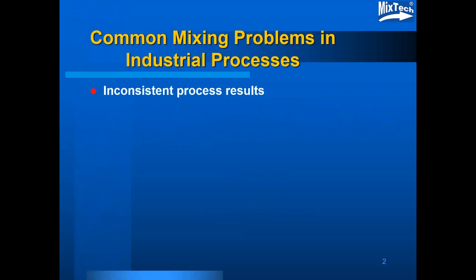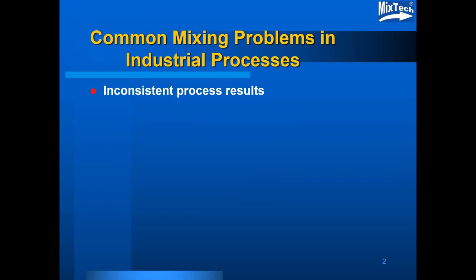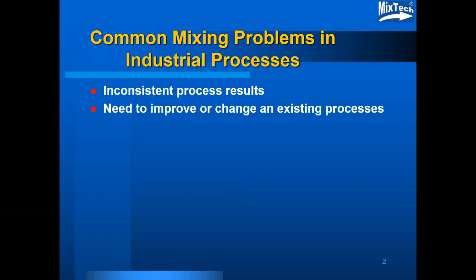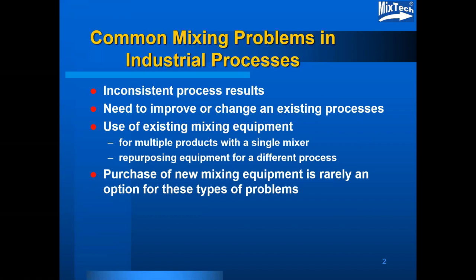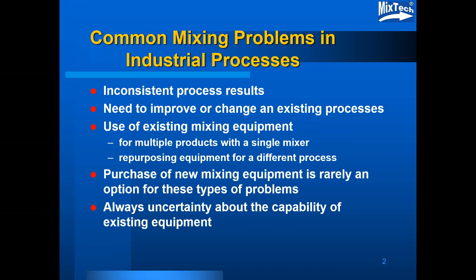The idea of problem solution comes about as a result of understanding the type of common problems that exist. Inconsistent process results is probably the most common one, but there's also a need to improve or change an existing process, and oftentimes it involves the use of existing mixing equipment for multiple products with a single mixer or repurposing equipment for a different process. Purchase of new equipment is rarely an option for these types of problems and there's always uncertainty about the capability of the existing equipment.